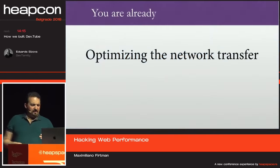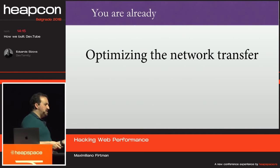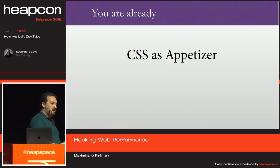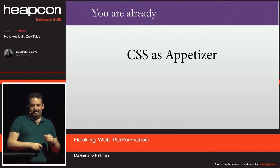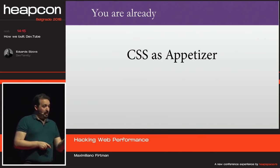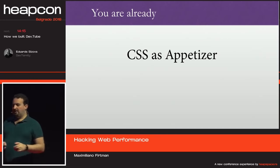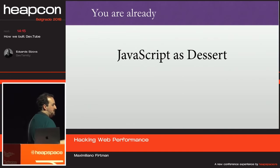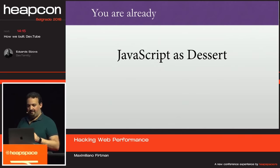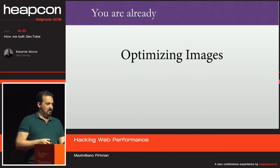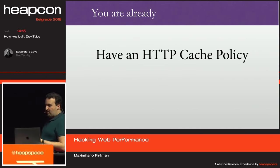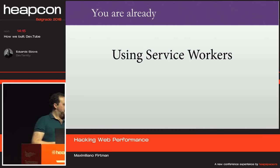You're already doing a lot of things: optimizing network transfer, enabling Gzip on text-based files, working with TLS and HTTP/2. You're using CSS as an appetizer — CSS should be small, the first thing delivered to the browser because CSS blocks rendering. And JavaScript as dessert at the end — defer JavaScript as much as possible, it's your baklava. You're already optimizing images, creating good PNGs and JPEGs, and you have an HTTP cache policy. You should be using service workers and avoiding redirects.